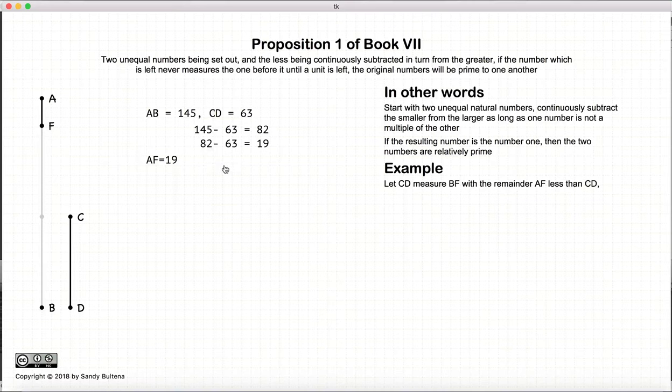So AF is equal to 19. And we're going to take the larger number, which is 63, and subtract 19 from it. So 63 minus 19 is 44. 44 minus 19 is 25. 25 minus 19 is 6. And we cannot subtract 19 from 6. So again, we switch roles.